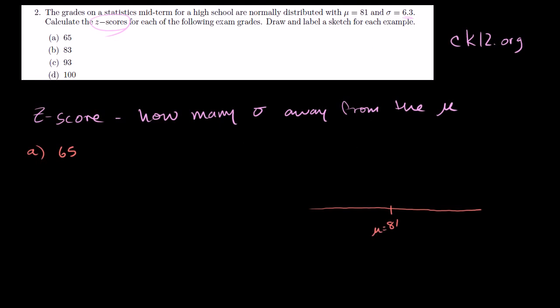So let me just draw one chart here that we could use the entire time. If this is our distribution, we have a mean of 81. And then a standard deviation of 6.3. They're telling us that it's normally distributed. So I can draw a nice bell curve here. This is the mean right there at 81. One standard deviation above is going to be 87.3. If we go 6.3 in the negative direction, that gets us to 74.7. So that's one standard deviation below and above the mean.